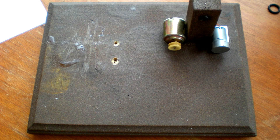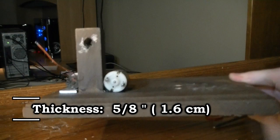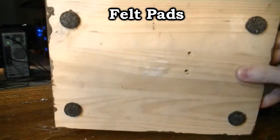The base of the engine is made of wood and is nine inches by seven inches. Its thickness is five eighths of an inch. I spray painted the base with this brown textured spray paint. On the bottom of the base I've added four felt pads.